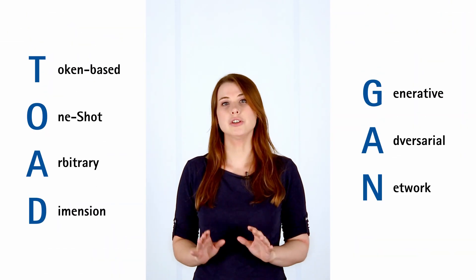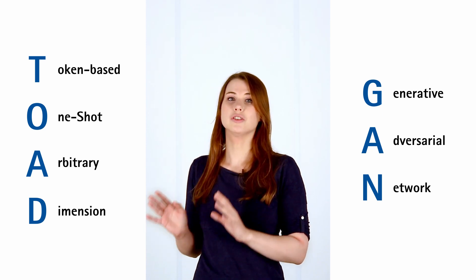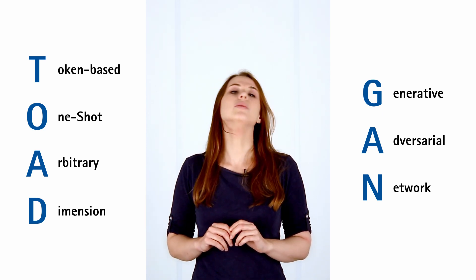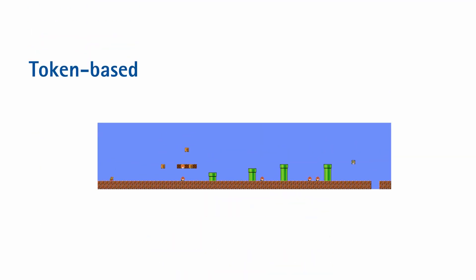TOAD-GAN stands for Token-Based, One-Shot, Arbitrary Dimension Generative Adversarial Network. We're dealing with token-based maps of levels. These can be converted nicely into tensors by making a binary layer for each token, representing its occurrences in the level.